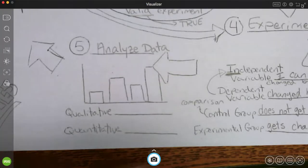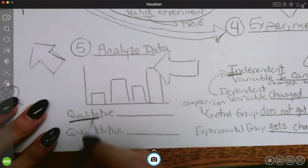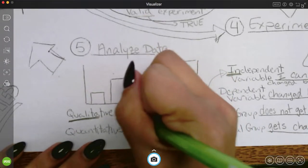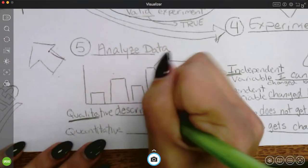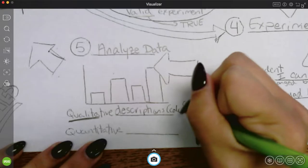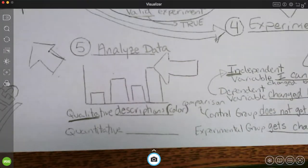So qualitative. If I look at this word right here, qualitate or quali, it sounds like quality. These are going to be descriptions. So example, maybe color. That's a description. I can say, this one turned red or this one turned blue or something like that. It's not a number.